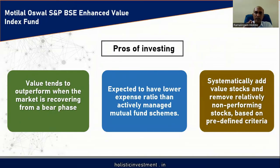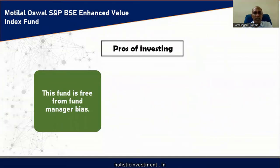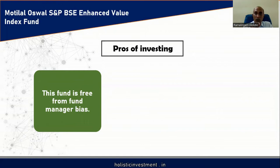This fund has the potential to systematically add value stocks and remove relatively non-performing stocks based on predefined observable criteria, without human intervention. The fund is also free from fund manager bias, also known as stock selection risk. In an actively managed fund, if the fund manager's analysis goes wrong, there is a probability the fund can underperform the benchmark. Here, the fund manager simply buys the entire index, so there is no stock selection risk and no fund manager bias.